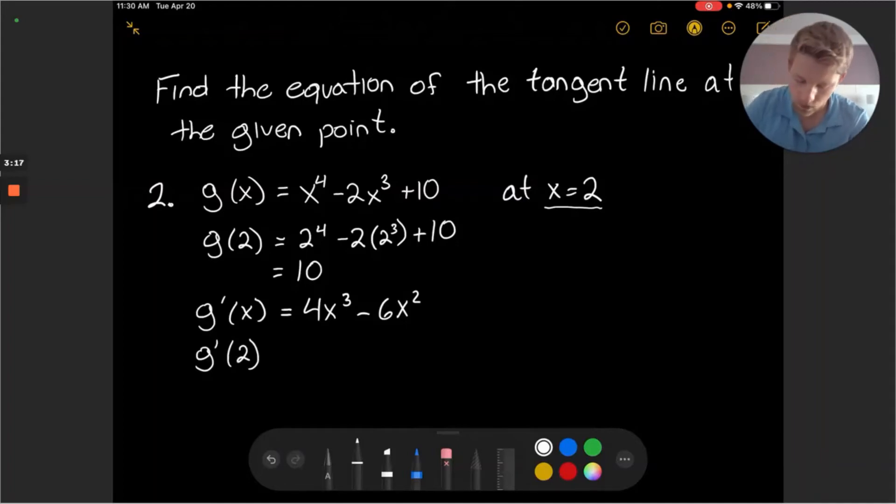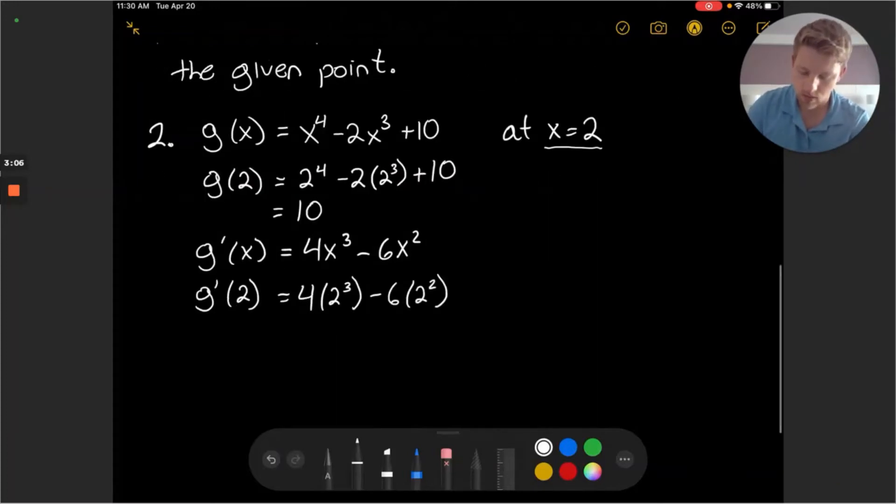And when we do so we'll have 4 times 2 cubed and then minus 6 times 2 squared. We can simplify this expression. This will be 4 times 2 times 2 to the third power here is 8.